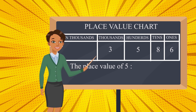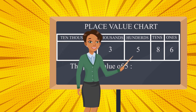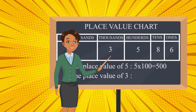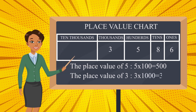Five is in the hundreds place. Five in hundreds place means five hundreds. In the same way, we find out the place value of three. Three is in the thousands place, which means three thousands — three times one thousand is nothing but three thousand. This is how we find out the place value of each digit in a given number.